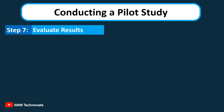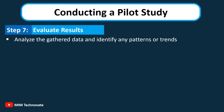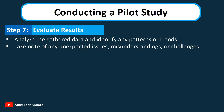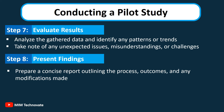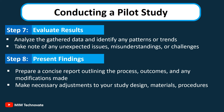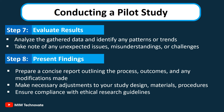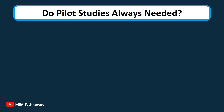Step 7 — Evaluate Results: Analyze the gathered data and identify any patterns or trends. Take note of any unexpected issues, misunderstandings, or challenges encountered during the pilot. Step 8 — Present Findings: Prepare a concise report outlining the process, outcomes, and any modifications made. Based on the pilot study's results, make necessary adjustments to your study design, materials, and procedures. Additionally, ensure compliance with ethical research guidelines even during the pilot phase.